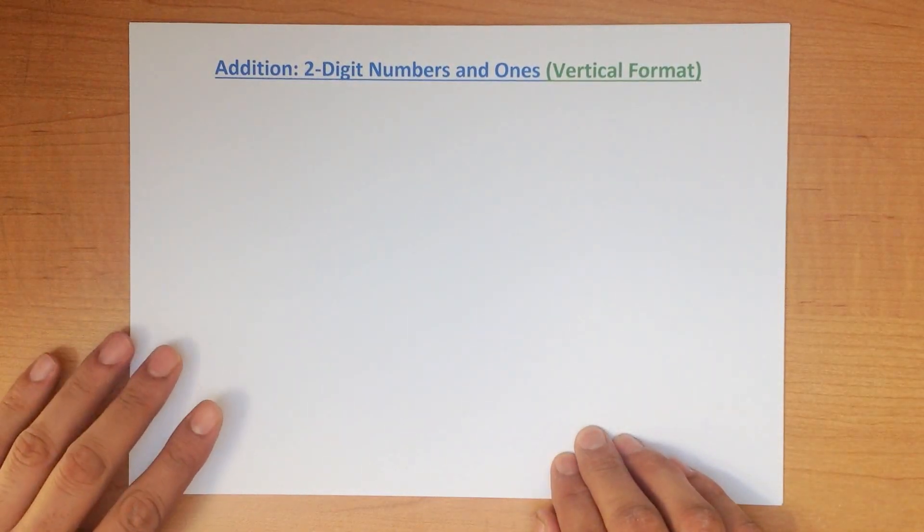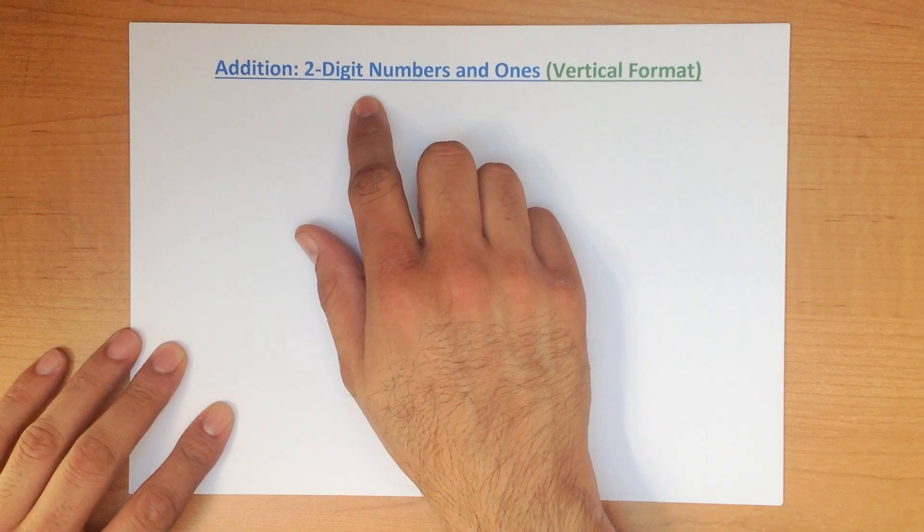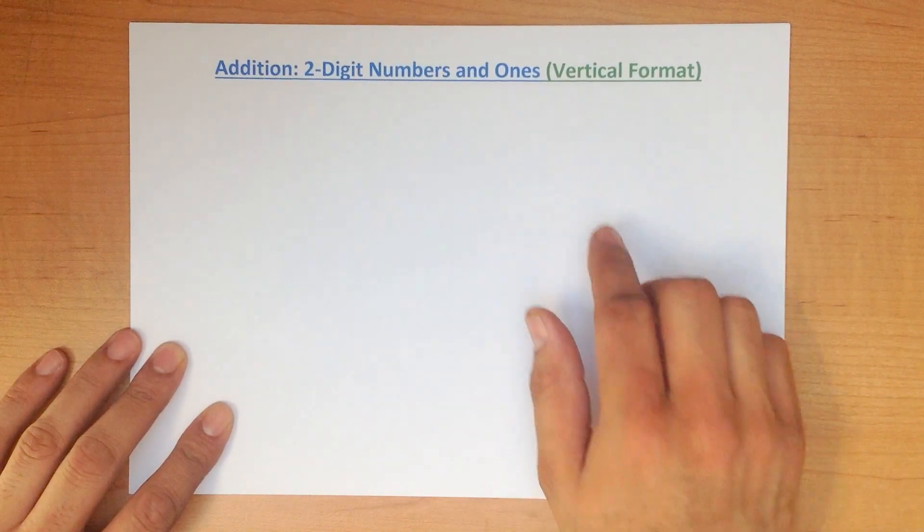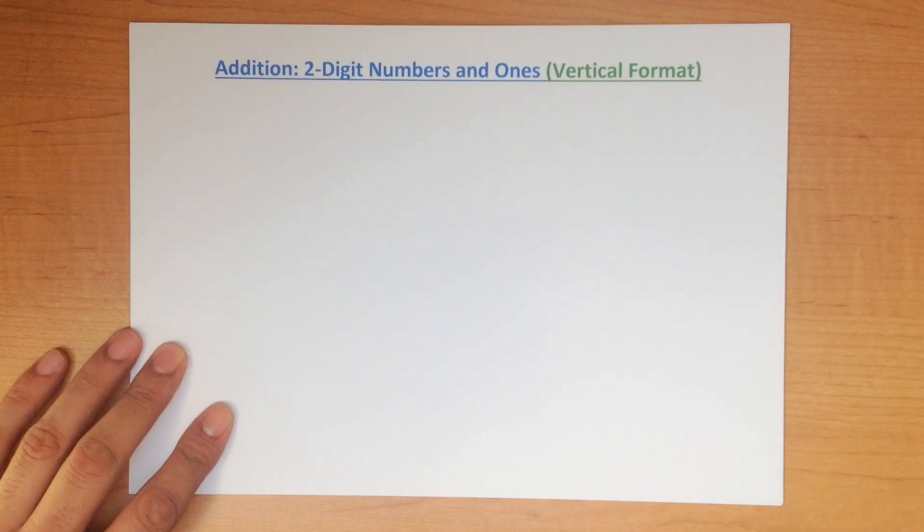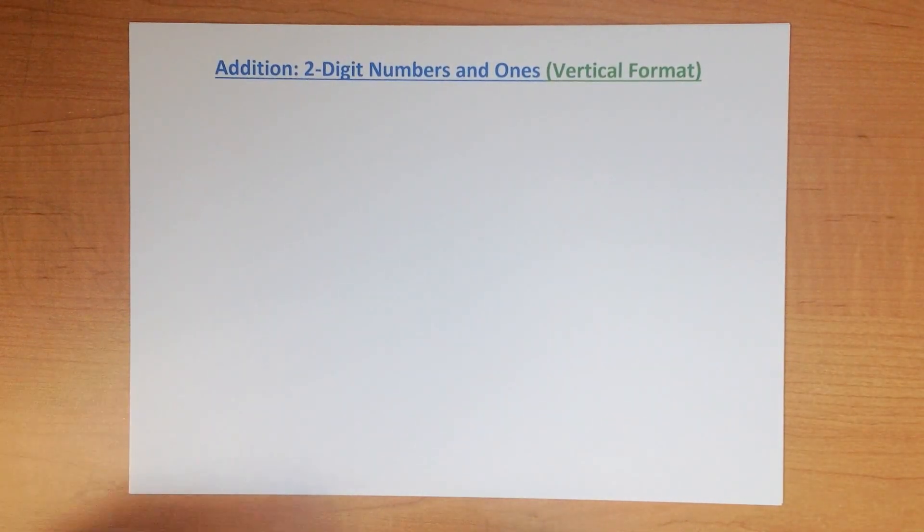In this tutorial we are going to go through addition of two-digit numbers and ones using the vertical format. So let's start with a nice easy example.